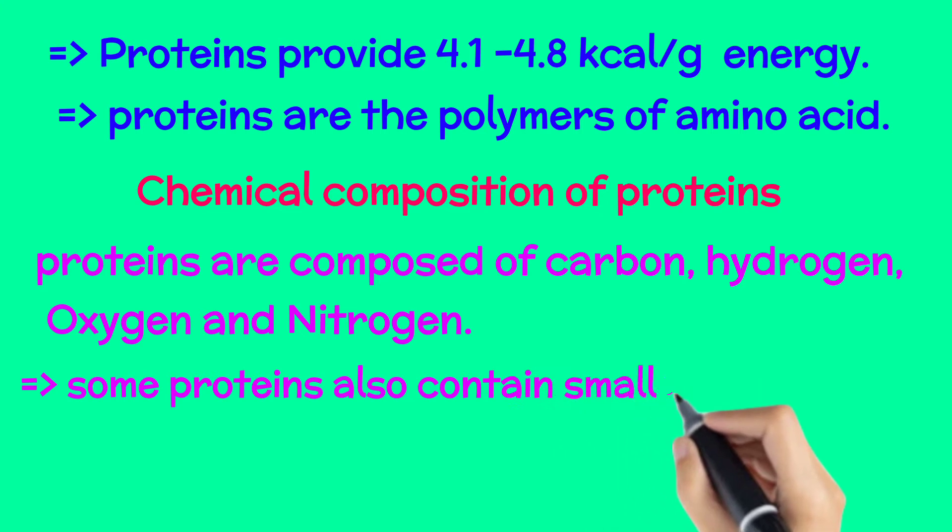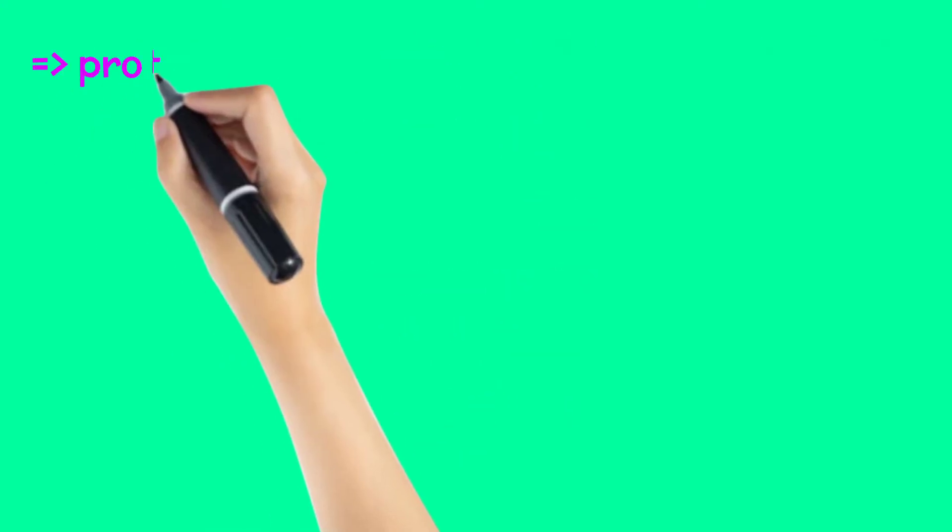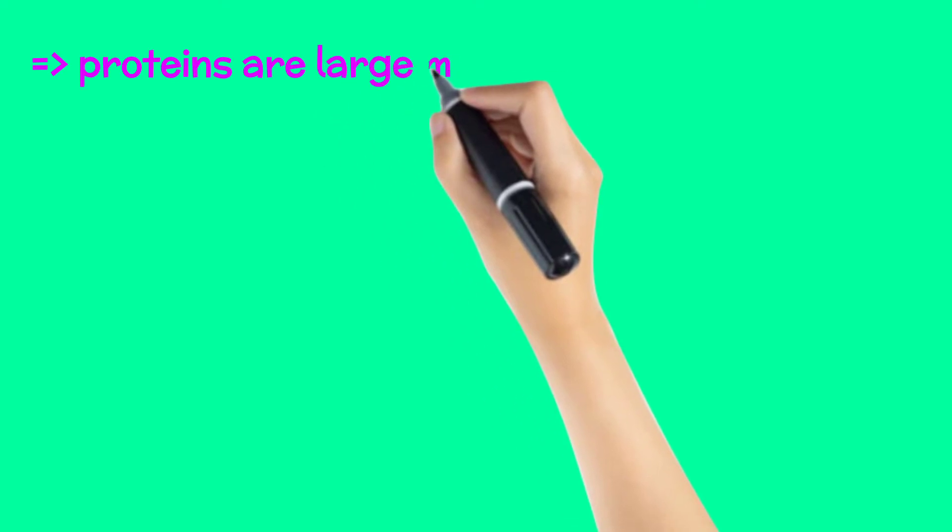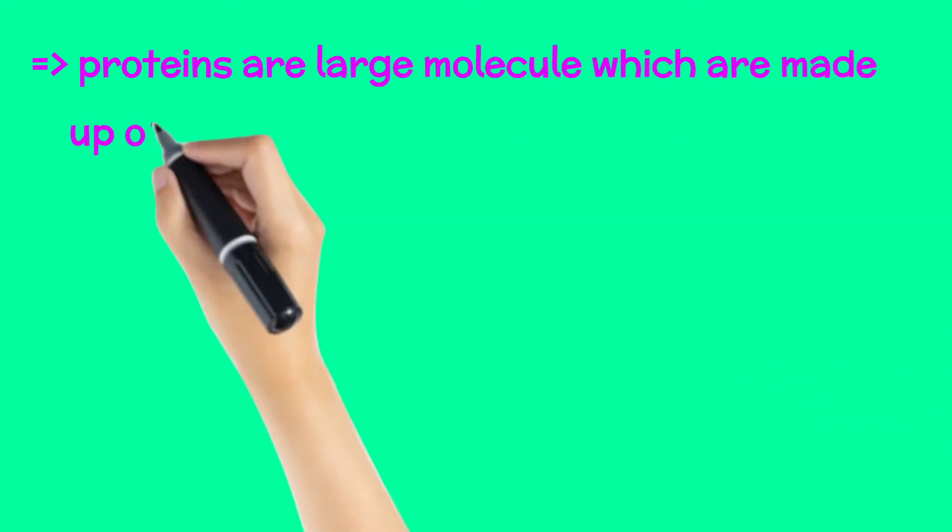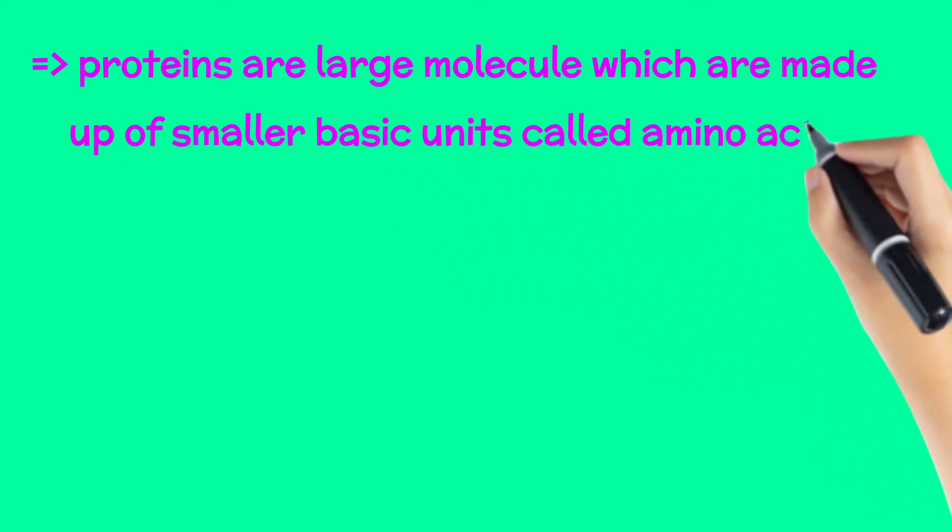Some proteins also contain smaller quantities of sulfur and phosphorus. Proteins are large molecules which are made up of smaller basic units called amino acids.